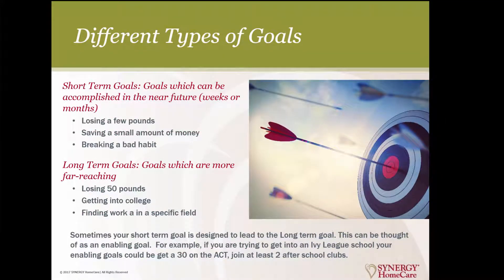There are different types of goals, and we're going to focus on two. The first is short-term goals — goals which can be accomplished in the near future, typically weeks or months. It may be losing two pounds, saving a small amount of money, breaking a bad habit, stopping smoking, or getting to bed earlier. Long-term goals are much more far-reaching. While a short-term goal is losing a few pounds, a long-term goal could be losing 50 pounds, getting into college, or finding work in a specific field. Sometimes your short-term goal is designed to lead to the long-term goal, and you can really think about this as an enabling goal.